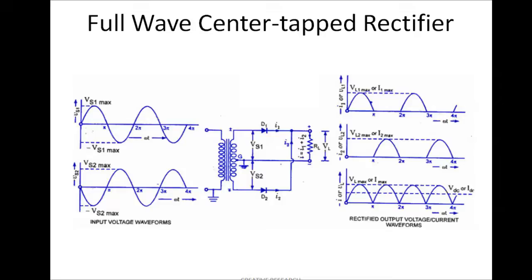In the full wave center tap rectifier, in the positive half cycle we get one output and in the negative half cycle we get the other output. The center tap transformer has its middle wire grounded. In the positive half cycle, diode D1 is conducting and we get the output over the load, while D2 is off. In the second half of the input signal, D1 will be off and D2 will be on. The device gets a constant voltage since the center tap ground is used.